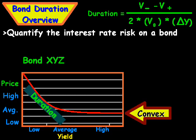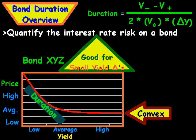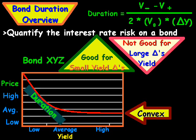So, you can tell that duration is a good measure for small yield changes, or interest rate changes. And it is not a very good measure for large changes in yield.